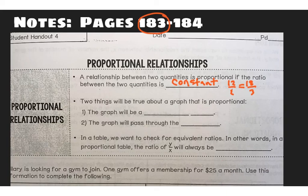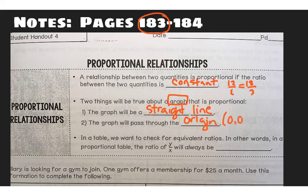Two things that will be true about a graph. When you come across a graph you're going to know if it is proportional, if the graph will be a straight line. So your graph will pass through the origin. Now the origin of a coordinate plane or a graph is 0, 0. So the line, the straight line, needs to pass through that point in order for it to be considered proportional.